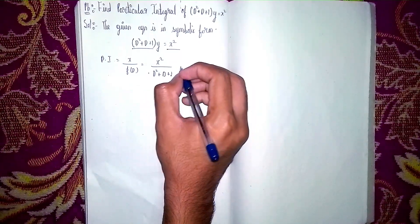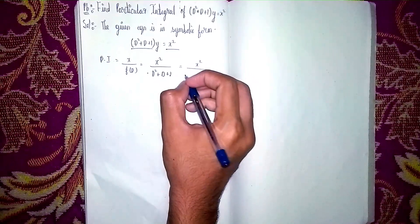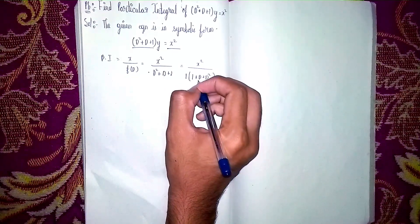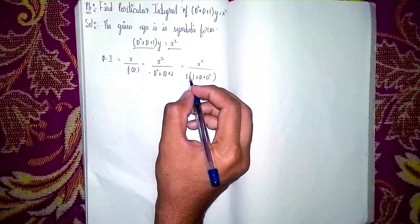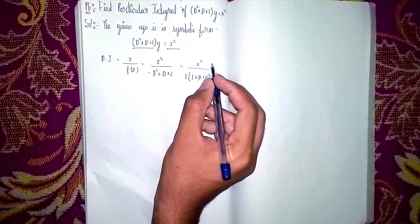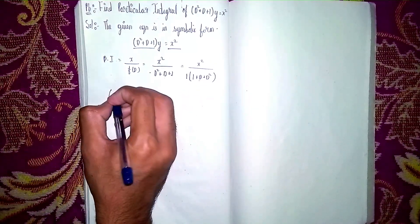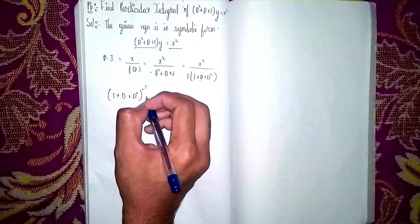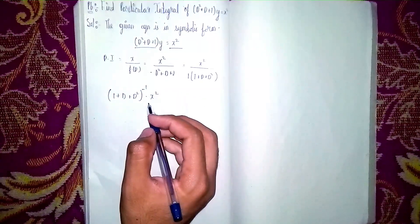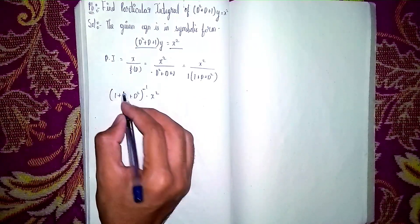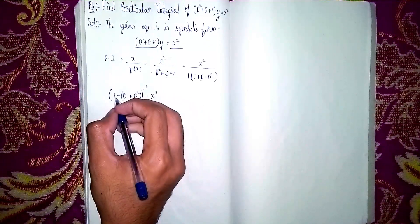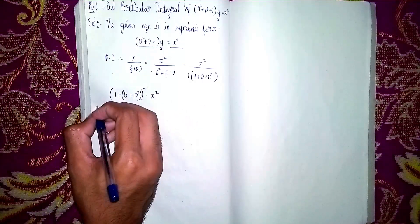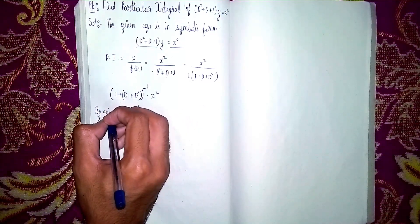Now take 1 outside. It becomes x² divided by 1, multiplied by (1 + D + D²). Dividing by 1 gives the same result, so we get (1 + D + D²) inverse into x². Now this bracket is in the form of (1 + D) inverse.